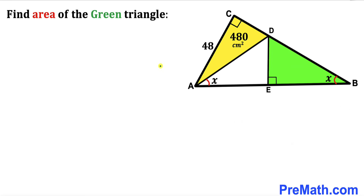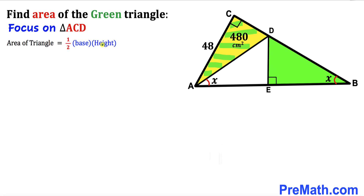Let's get started. Here's our very first step: let's focus on this yellow right triangle ACD and calculate side length CD. Recalling the area of a triangle formula — area equals one half times base times height — the area is 480, the base is 48, and the height is CD.